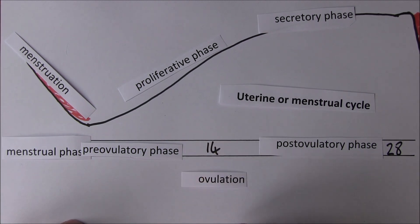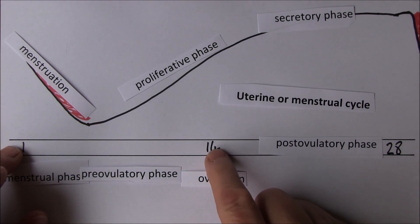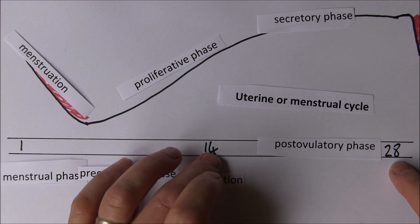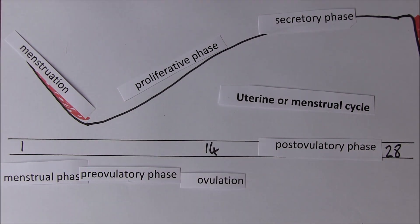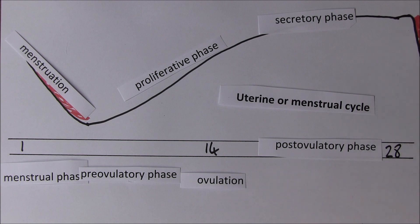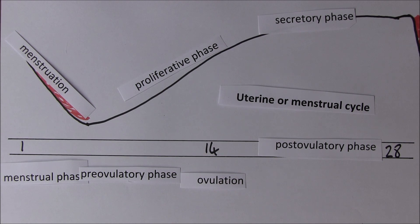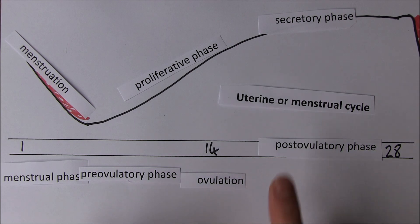The pre-ovulatory phase from day 1 to day 14 tends to be the variable component. From ovulation to the end of the cycle is much more consistently 14 days. The length of cycles can vary significantly — it could be 24 days up to 35 days. If it's a 24-day cycle, ovulation would occur on day 10; if it's a 34-day cycle, ovulation would have occurred on day 20.